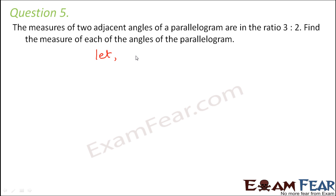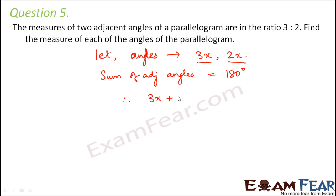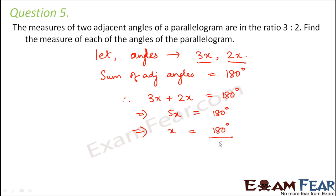Let us assume that the angles be 3x and 2x. Now as per the property of parallelogram, we know that the sum of adjacent angles in a parallelogram is equal to 180 degrees. Therefore, 3x plus 2x should be equal to 180 degrees, or 5x equals 180 degrees, so x equals 180 divided by 5, which is 36.